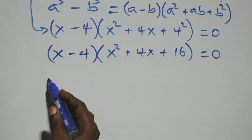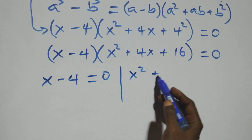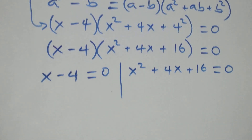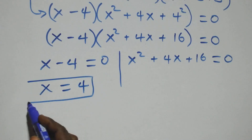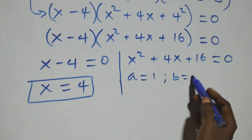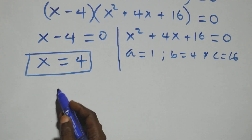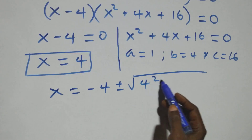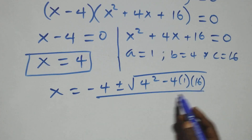We again have two possible cases. The first: x minus 4 equals to 0, giving x equals to 4, which is a real solution as well. Then we have a quadratic equation x squared plus 4x plus 16 equals to 0, where a equals to 1, b equals to 4, and c equals to 16. Applying the quadratic formula, this becomes x equals to minus 4 plus or minus square root of 4 squared minus 4 times 16, over 2 times 1.